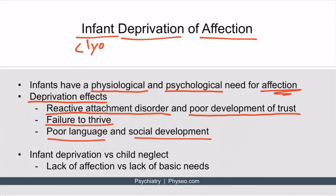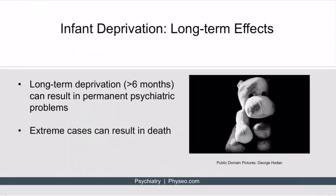It's important to recognize that infant deprivation of affection is different from child neglect. Infant deprivation of affection refers to a lack of affection, versus child neglect which involves a lack of basic physical needs. Infant deprivation can result in problems seen throughout childhood and adult life. If deprivation is longer than six months, the negative impacts are likely to be permanent, manifesting as psychiatric problems. In extreme cases, although the cause is not completely understood, infant deprivation of affection can result in death.